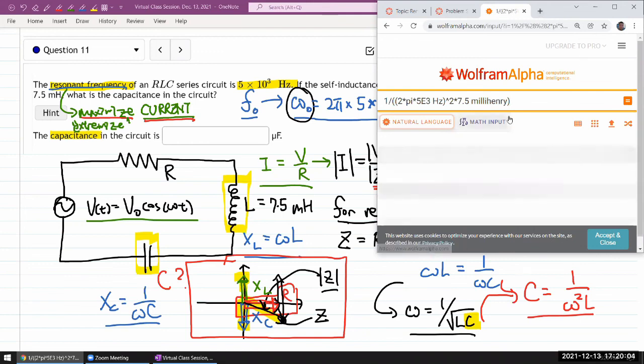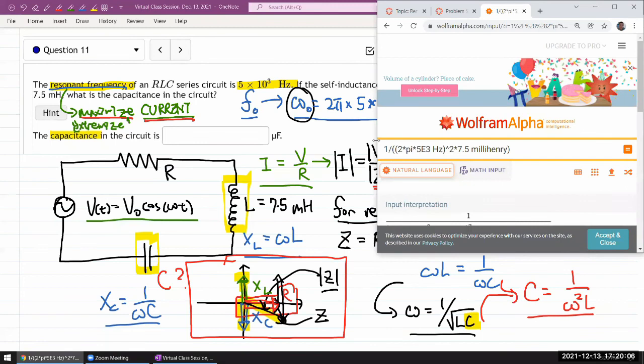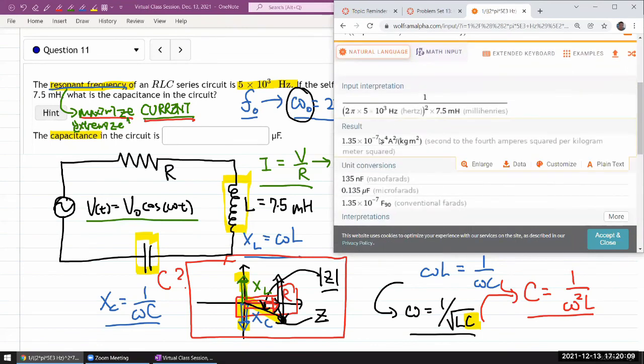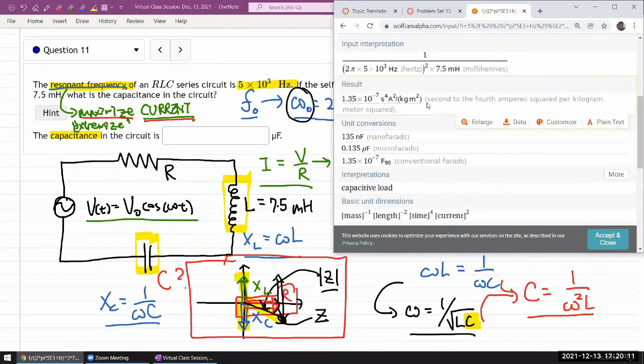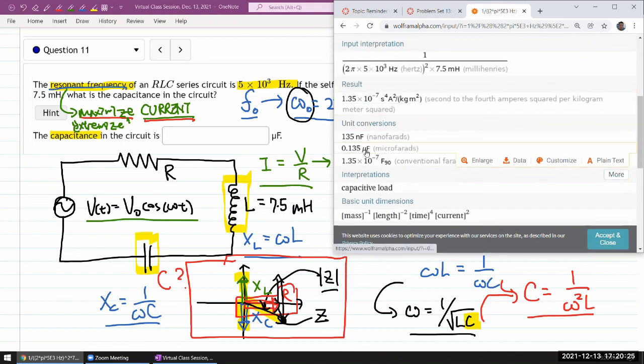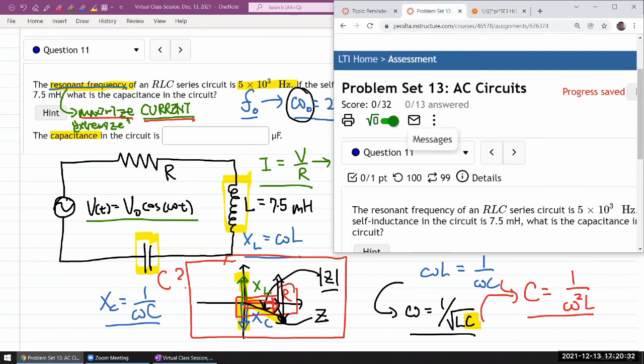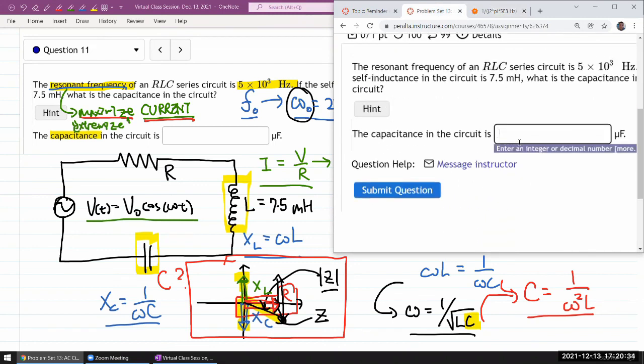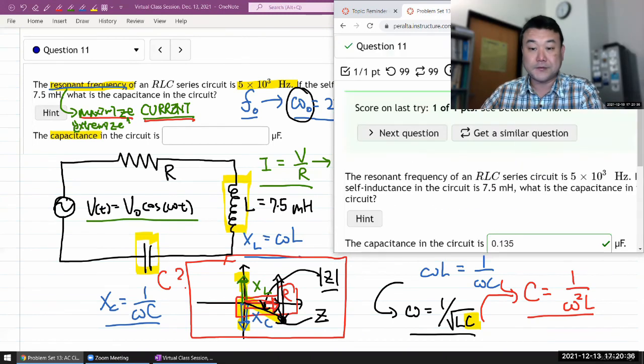So after Wolfram Alpha works it out, the unit choices I get, there it is. So it gives a bunch of other units like this is in terms of the basic SI units. It also, Wolfram Alpha because it's aware of units. It knows that these combine into unit of farad. So unit of microfarad is one of the choices it gives. 0.135 that ought to be the answer. 0.135. So that's it.